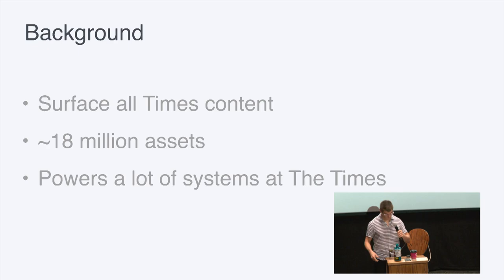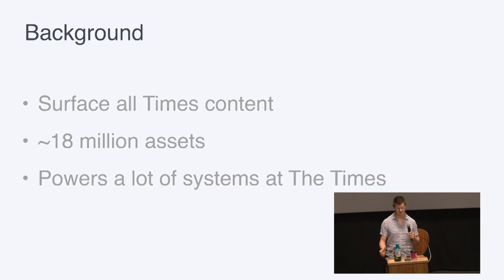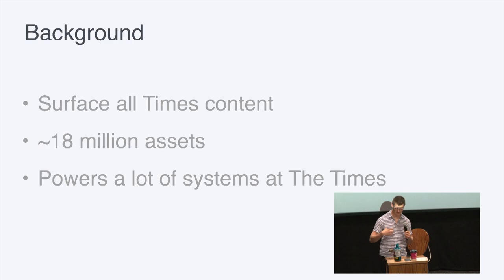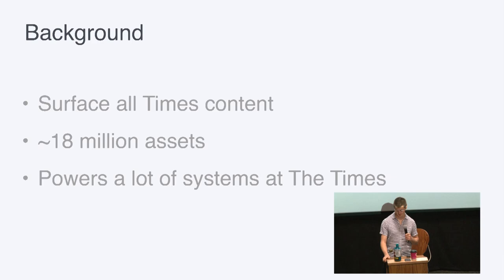For a bit of background about how search works at the New York Times: up to 2018, it had worked more or less unchanged for a number of years. It powers site search and a number of other services — there are a lot of internal and external consumers of search. One I like in particular is Times Machine, which is a web-based microfiche reader. It's a great way to read really old archive content, like the front page from FDR's election day.